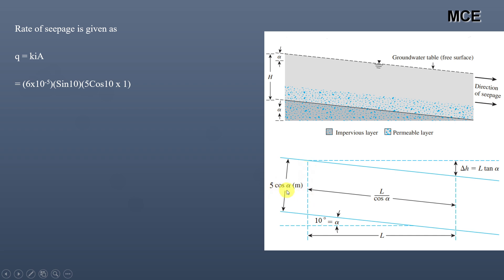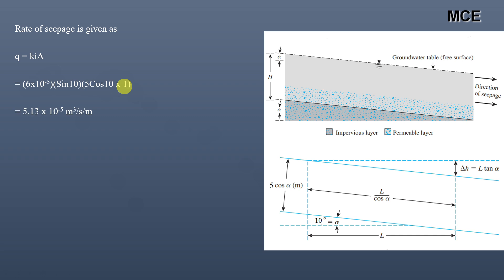The cross-sectional area: the depth is equal to 5·cos(α), with α = 10°. Taking the unit width equal to 1, this gives the rate of seepage equal to 5.13 × 10⁻⁵ m³/s per meter.